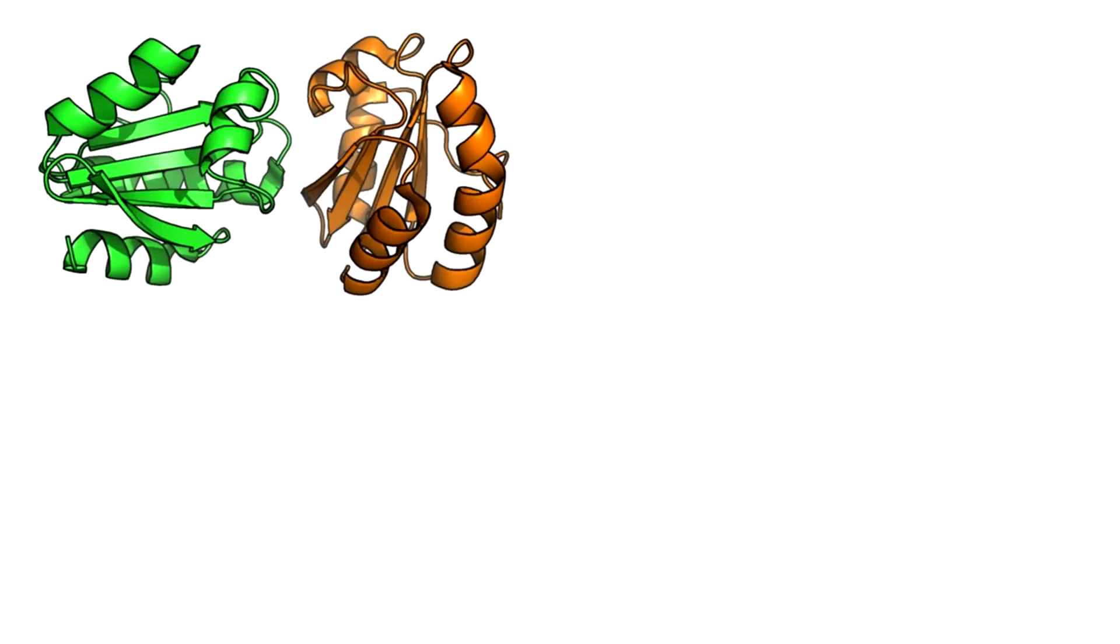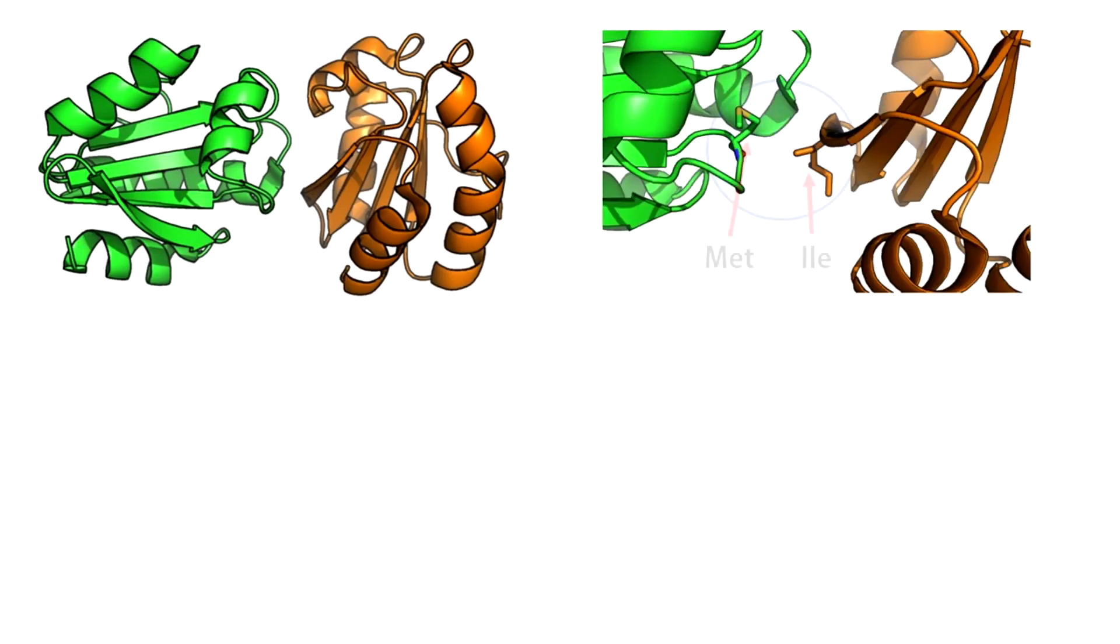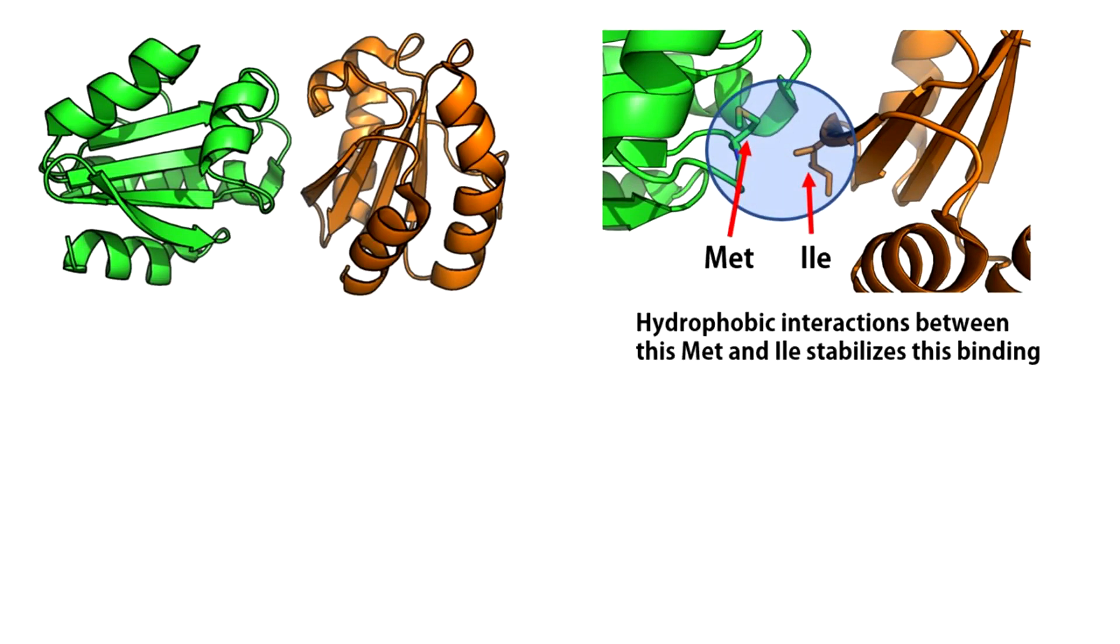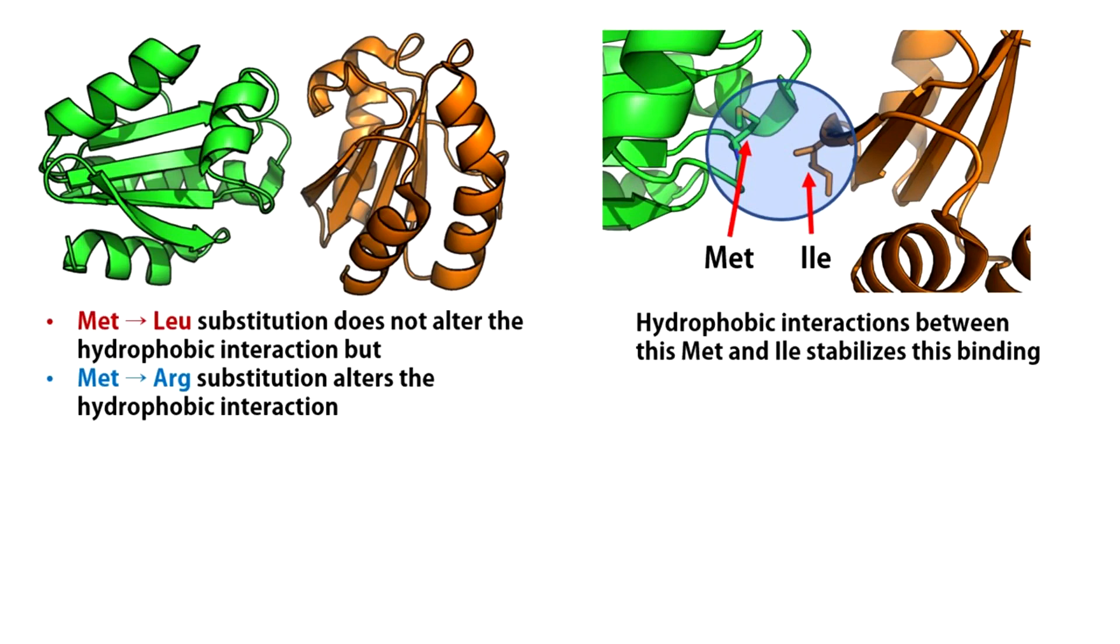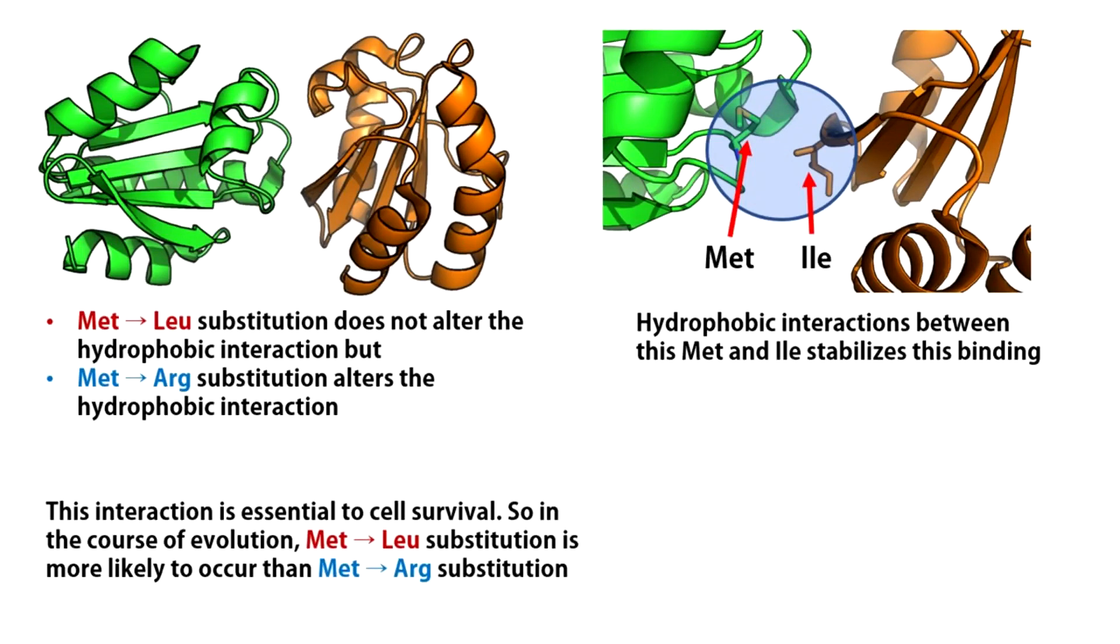Think of a protein complex. Hydrophobic interactions between a methionine and an isoleucine amino acid contributes most of the binding energy. In this case, a methionine to leucine substitution can have a very different impact on fitness compared to a methionine to arginine substitution. Methionine to leucine substitution conserves the hydrophobic interaction because both amino acids are highly hydrophobic in nature. But a methionine to arginine substitution will disrupt this interaction as arginine is charged. This means to maintain this interaction in the course of evolution, methionine to leucine substitution is more likely to occur than methionine to arginine substitution.